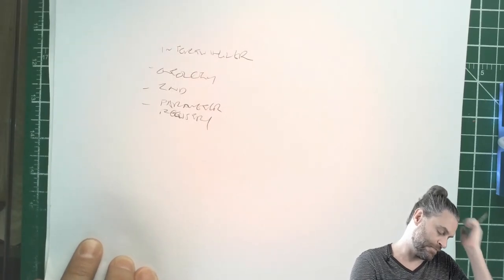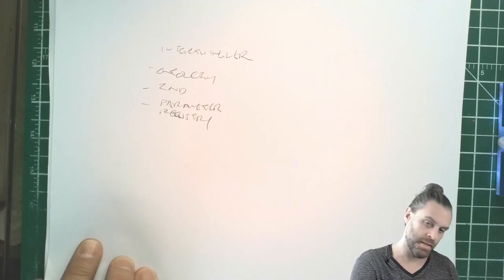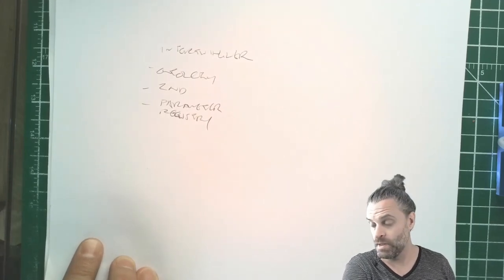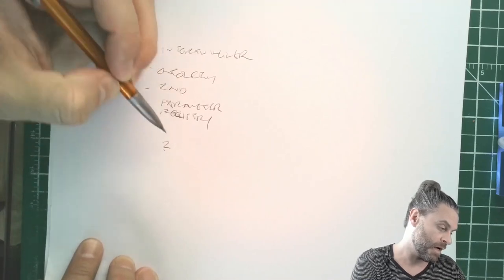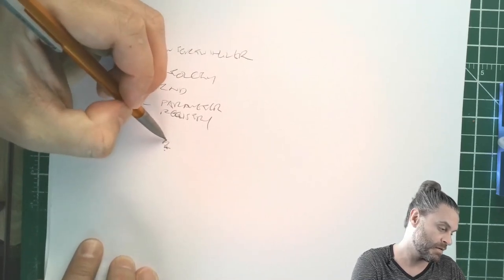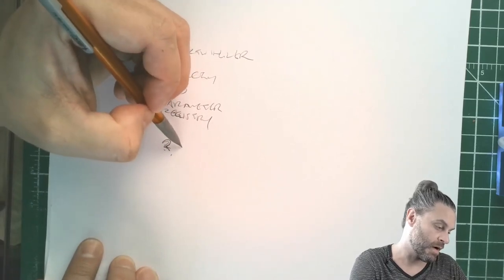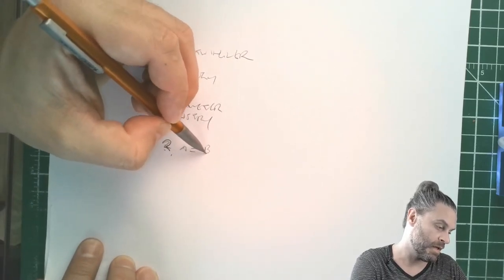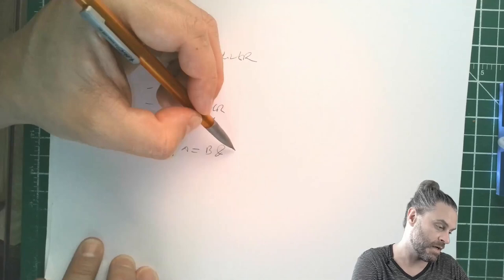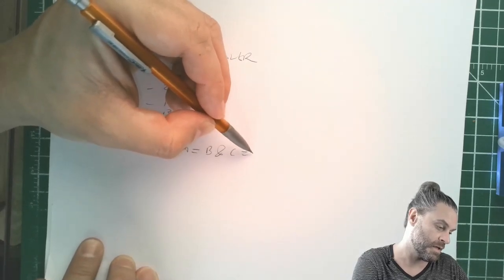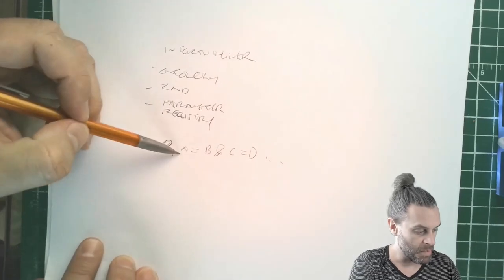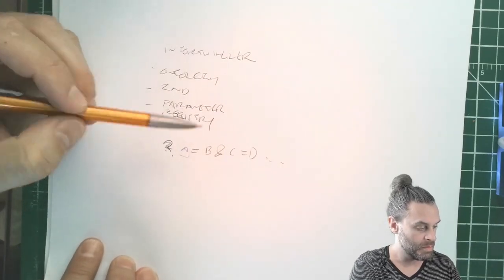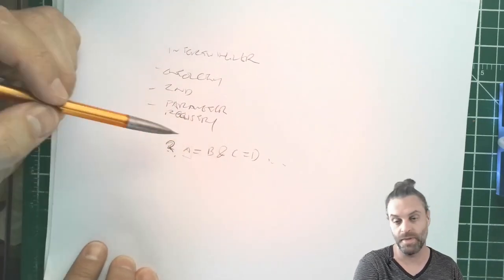The idea behind the parameter registry is, not exclusively, but when you have a query string, you've got A equals B, and then ampersand, C equals D, whatever. You want to be able to effectively round trip this.